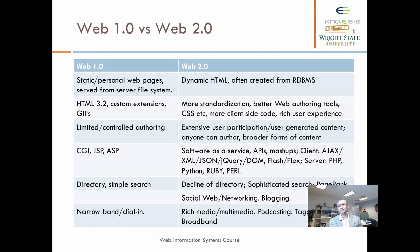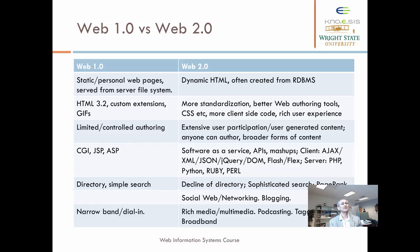Directories declined because manual cataloging simply was not possible anymore. On Web 2.0, there is more sophisticated search — PageRank being one key element. Web 2.0 is for some synonymous with the social web and social networking. You had MySpace, then came Facebook. Today Facebook is part of many people's lives, and it is a company less than a decade old — Facebook started in 2005. Social web predates that with MySpace and Orkut, which no longer exists. There is also Google+, and blogging came about.